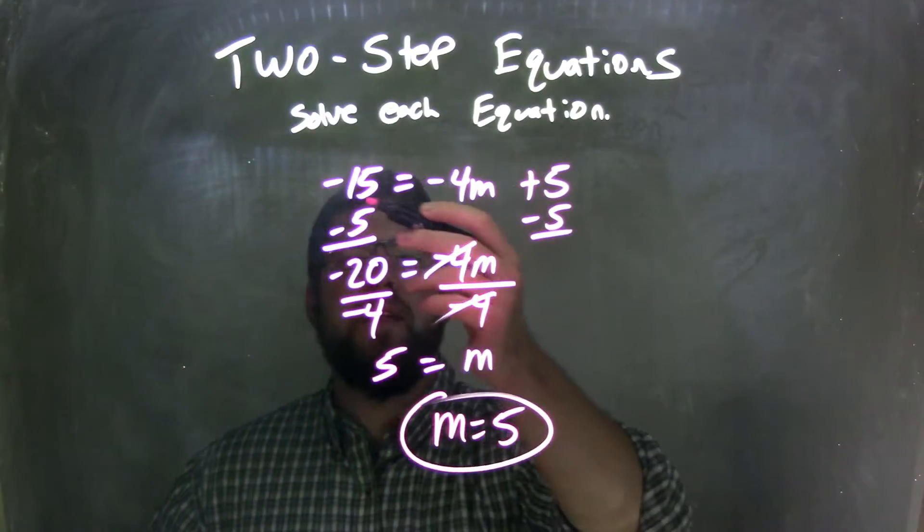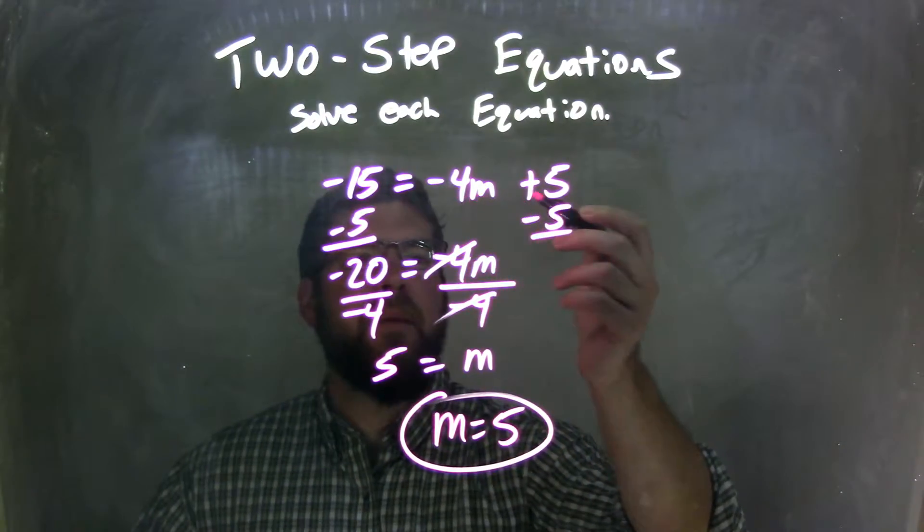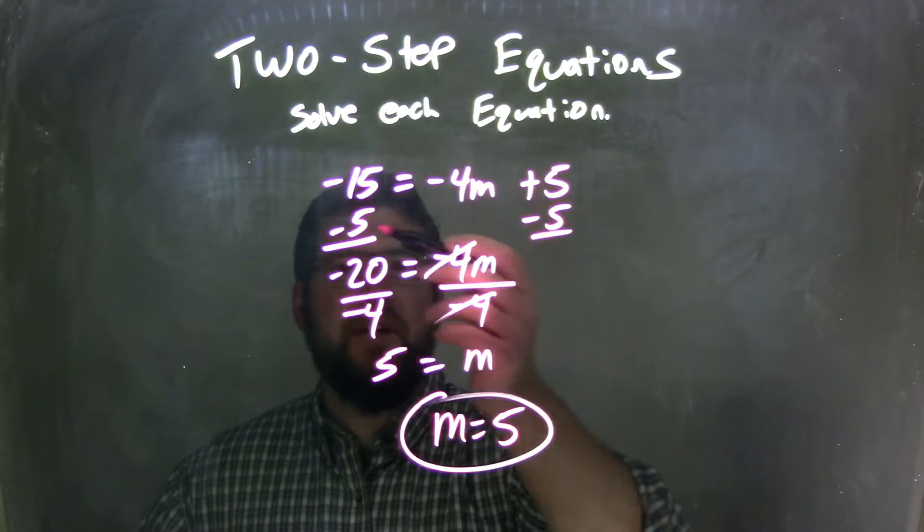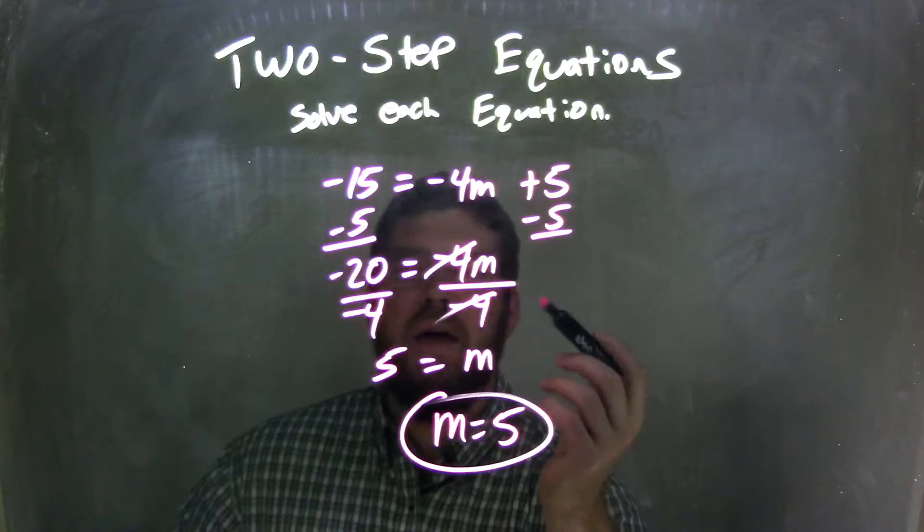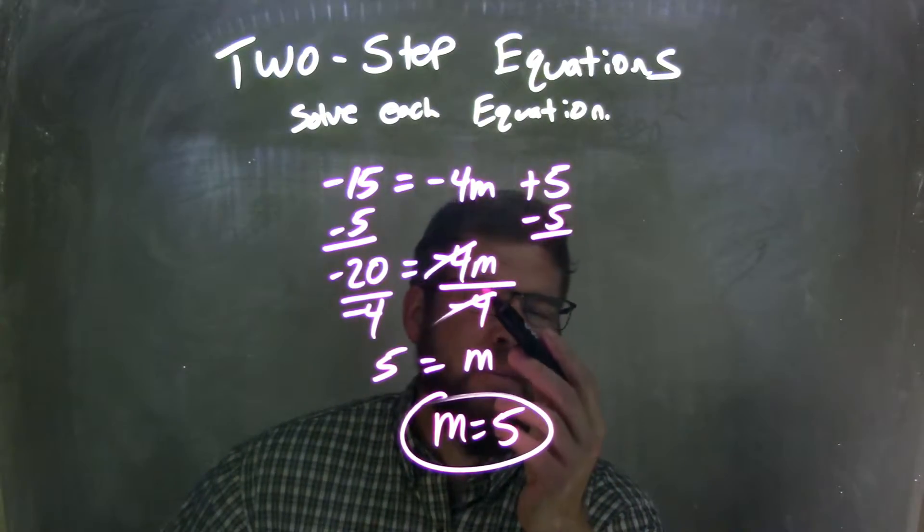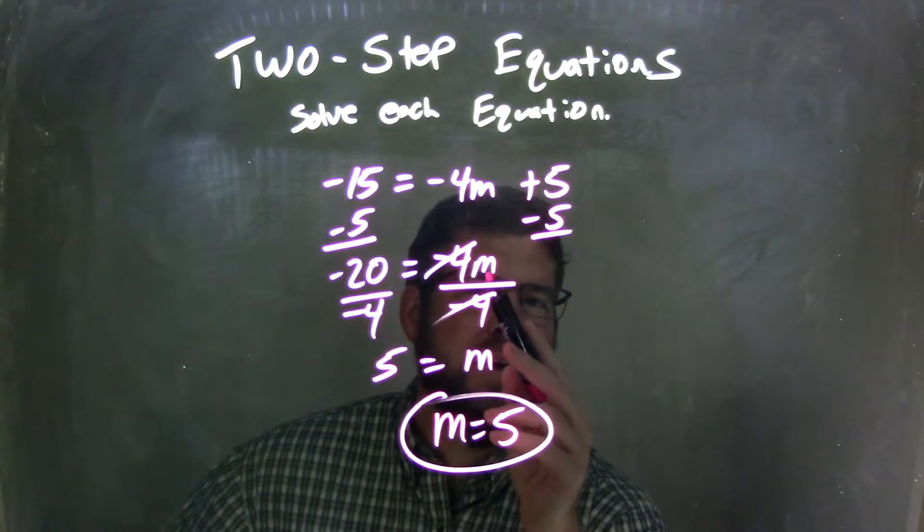So, let's recap. We started with negative 15 equals negative 4m plus 5. I subtracted 5 from both sides to get negative 20 equals negative 4m, and then divided by negative 4, because that's the opposite of that multiplication that's going on between negative 4 and m.